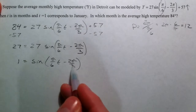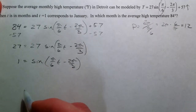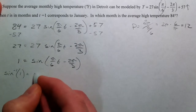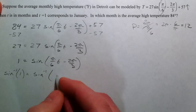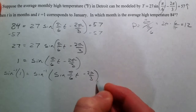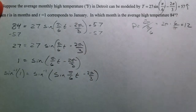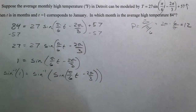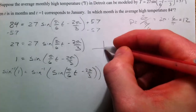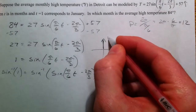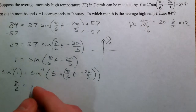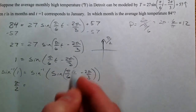If you divide by 27, you get 1 equals sine of (π/6 · T − 2π/3). Where is the sine value equal to 1? We're doing inverse sine of 1 equals inverse sine of sine of (π/6 · T − 2π/3). The y value equals 1 when you're straight up, at π/2. So inverse sine of 1 is π/2. Inverse sine of sine of something is just equal to the something.